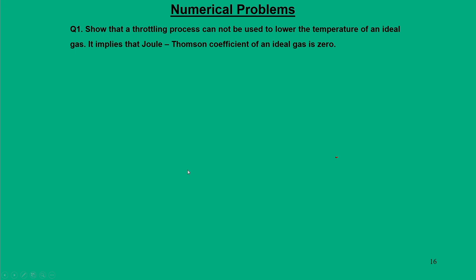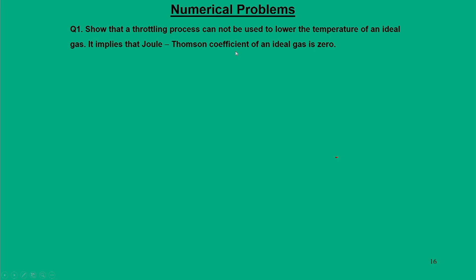With this I come to the end of the lecture. Towards the end, let us solve a simple problem. The Joule-Thomson coefficient for an ideal gas is 0. In other words, what happens if we use the throttling process to lower the temperature for an ideal gas? Can we throttle it? This is the physical significance and physical consequence we need to address.